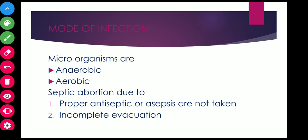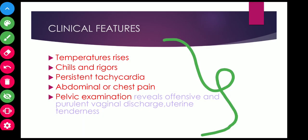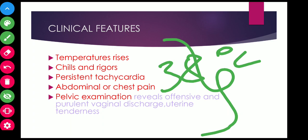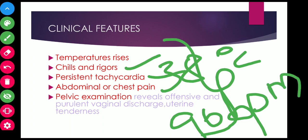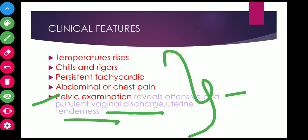The important clinical features of septic abortion: the woman looks sick and anxious, temperature rises to about 38 degrees centigrade, and chills and rigors can be seen. There is persistent tachycardia of about 90 beats per minute, and abdominal or chest pain can be seen. On pelvic examination, there will be offensive and purulent vaginal discharge and uterine tenderness. The woman may also have diarrhea, vomiting, and impaired mental state.